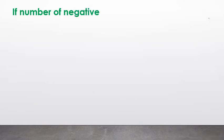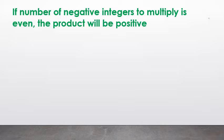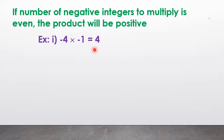If the number of negative integers to multiply is even, the product will be positive. For example, (−4) × (−2) = +4. Here there are 2 negative signs. 2 is an even number, so the product is positive.